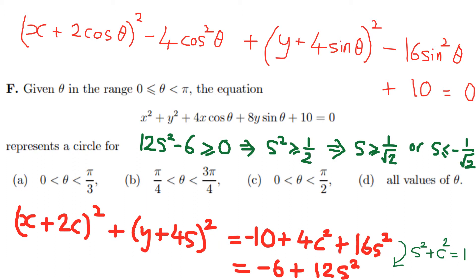The radius squared has to be a positive number, so I've set 12sin²θ − 6 ≥ 0. Tidying that up gives two possible sets of values: sinθ ≥ 1/√2 or sinθ ≤ −1/√2. Let's draw the sine curve and investigate further.